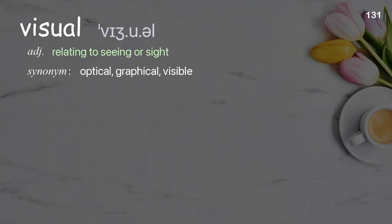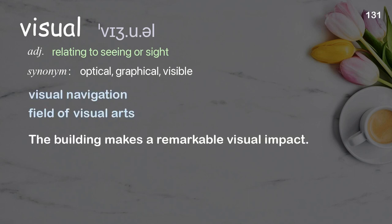Visual: relating to seeing or sight. Examples: visual navigation, field of visual arts. The building makes a remarkable visual impact.